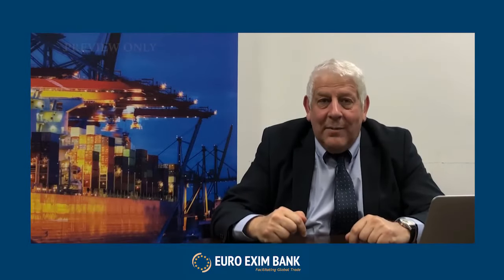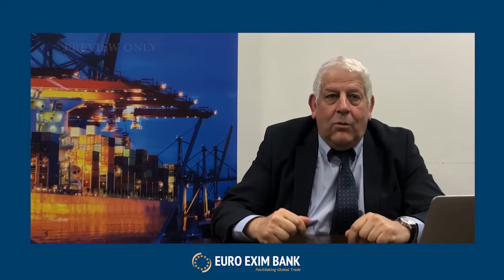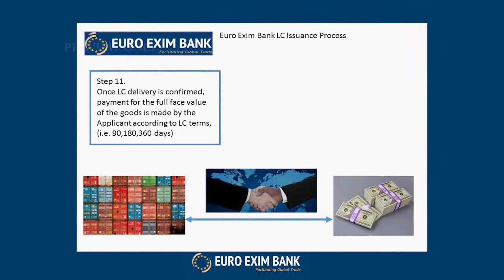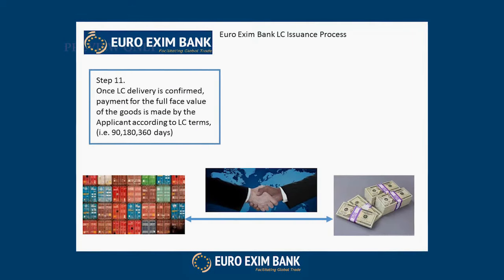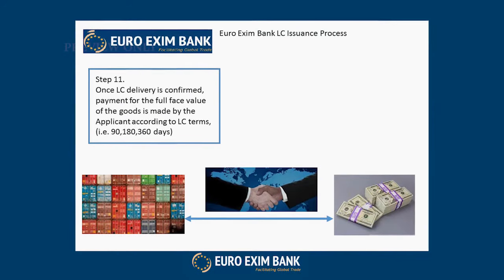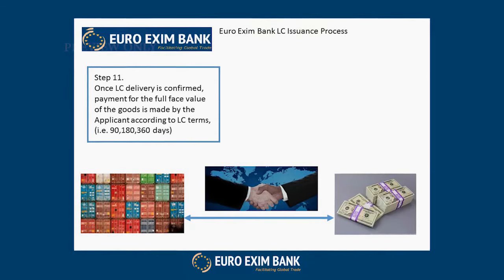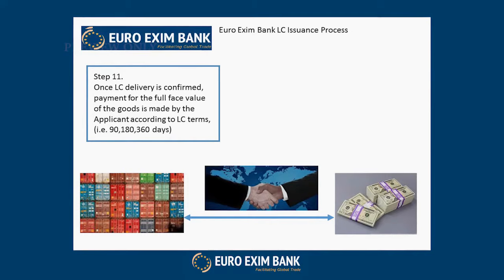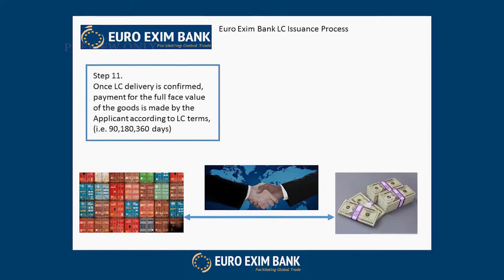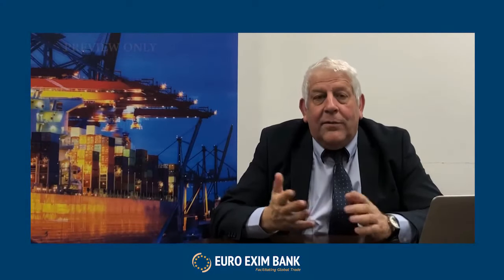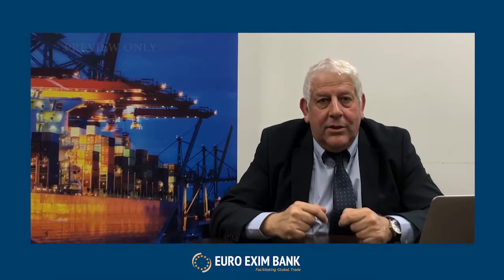Step eleven is when payment takes place. We expect the applicant to make payment to the beneficiary and into the beneficiary bank. The goods are typically with them, and depending on the timing of the transaction — typically 90 days, 180 days, or 360 days — the transaction will then need to be paid for at that point. Goods have arrived safely and payment is made for those goods.